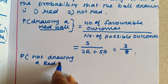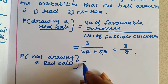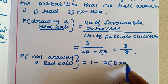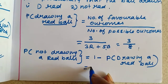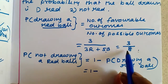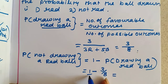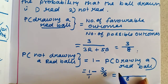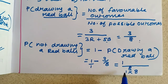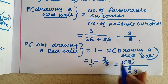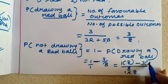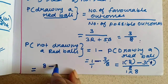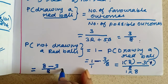Probability of not drawing a red ball is equal to 1 minus probability of drawing a red ball. 1 minus 3/8 — taking LCM, 1 into 8 is 8, so numerator is 8 minus 3, which gives 5 by 8.